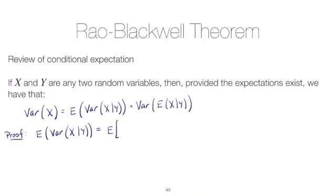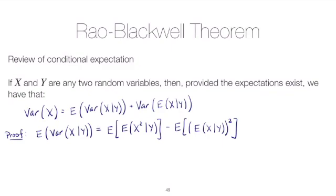Being consistent with that, the expectation of the variance is the expectation of the expectation of x squared given y, minus the expectation of the expectation of x given y, all squared. What we've done here is broken up the variance into the expected value of the square of x — everything conditioned on y — minus the expected value of x given y, squared, and then broken up the expected value over the difference. So two steps in one.